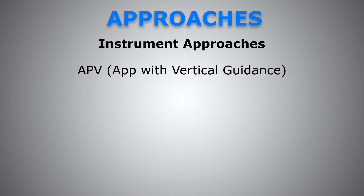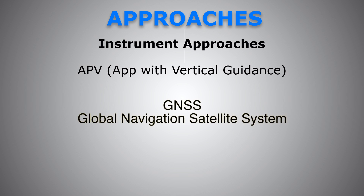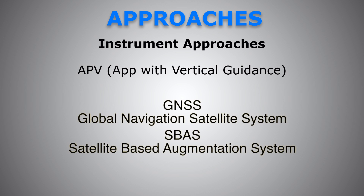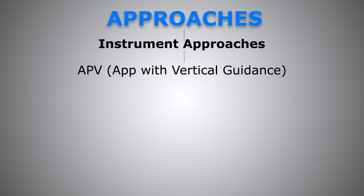Another difference is that an APV approach uses signals from GNSS — Global Navigation Satellite Systems — such as GPS. You also need to have an SBAS receiver, a Satellite-Based Augmentation System, which augments the GNSS signal based on differential technique. If you have any questions about GNSS, SBAS, and all these topics, please leave a comment below and I'll be more than happy to make a video about it. To be able to fly an APV, you have to have a GNSS receiver and an SBAS receiver.